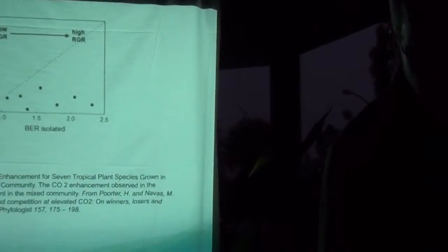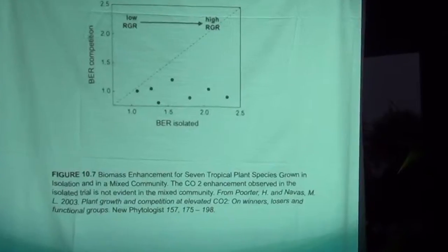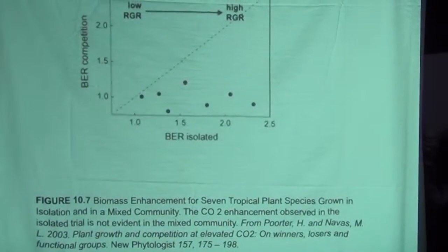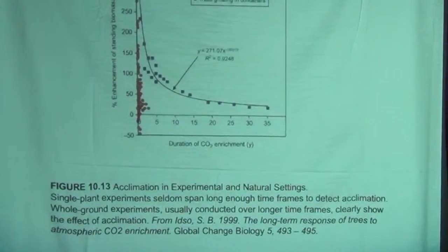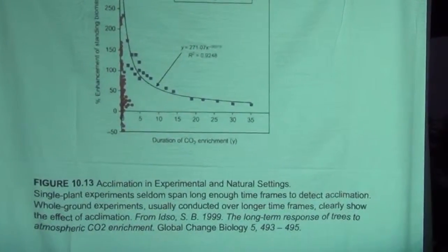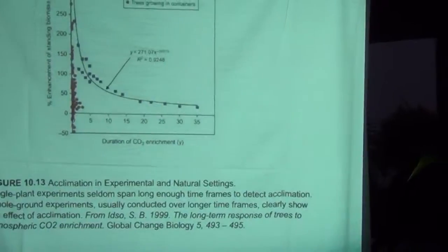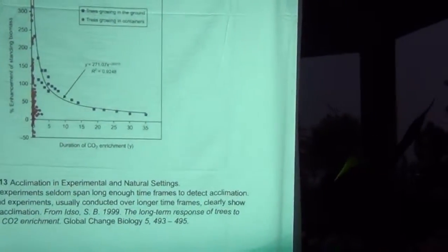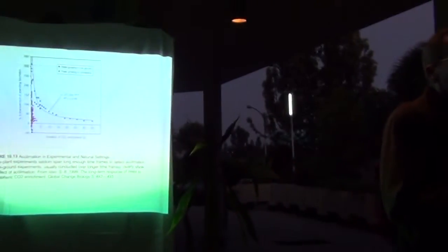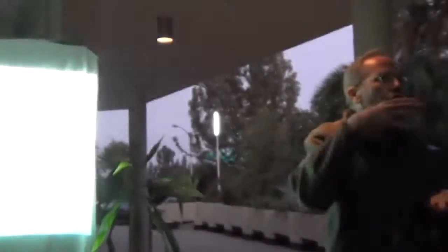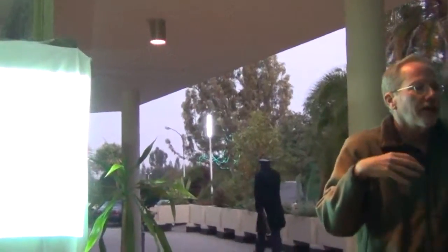Something interesting happens as you get to more and more natural settings. As you go from tightly controlled single-plant laboratory settings to more natural multi-species, multi-plant settings, the enhanced growth from temperature and CO2 tends to disappear. This is called down-regulation: when plants are in a fully natural environment, they don't experience as much growth benefit from either temperature or CO2 as they do in single-plant trials.